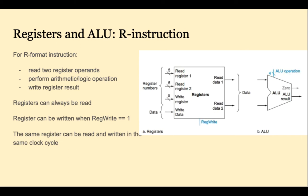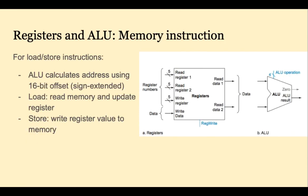The registers can be read at any time and written back when the register write signal is one. This explains how the same register can be read and written in the same clock cycle. For a load word or store word, the ALU's job is to calculate the address. It uses the 16-bit immediate field in the lower part of the instruction, sign-extended, as the second operand to the ALU. The first operand will be the RS register. For a load, memory is read and that value is written back to the write register. For a store, we write to memory.